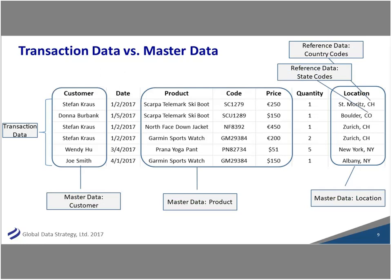To further explain: the transactions are the list of things happening — I'm buying things at a certain day and time. Examples of master data include your customer — Stefan, Donna, Wendy, and Joe have all bought from our company. Certain products with product codes and pricing are probably master data. Location can be master data. There's often a distinction between reference data and master data: master data entities tend to be more volatile, with more attributes that change.